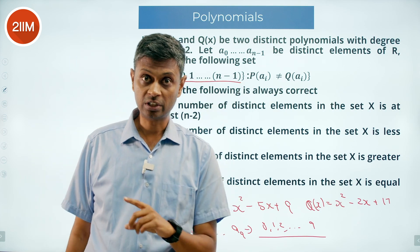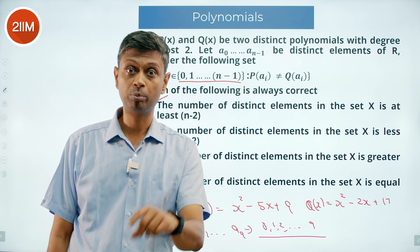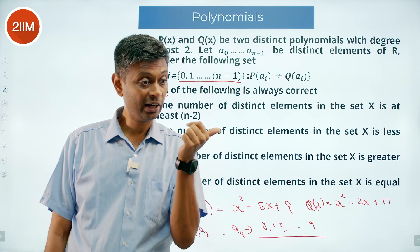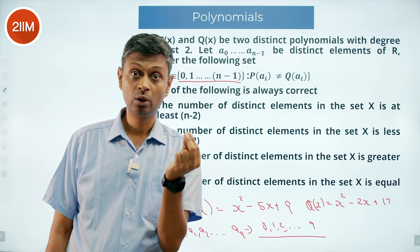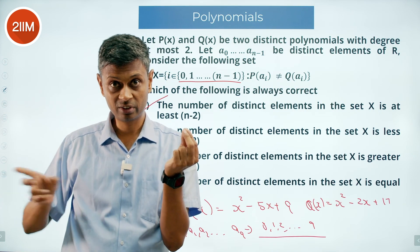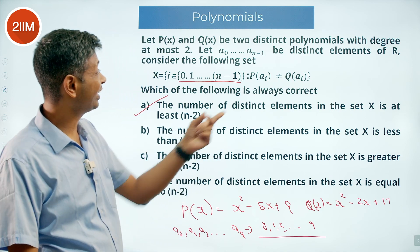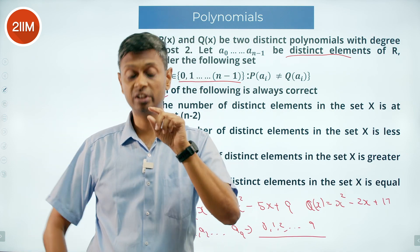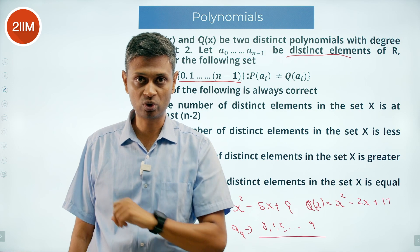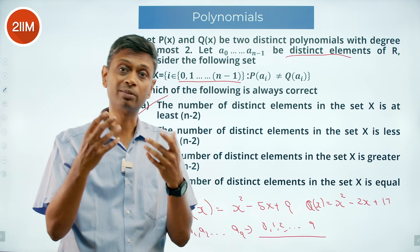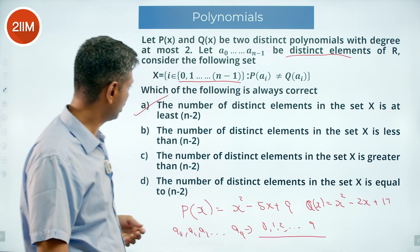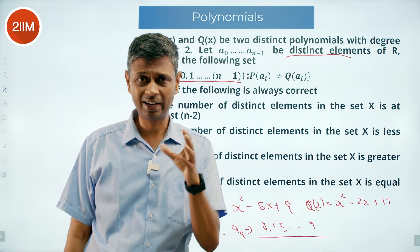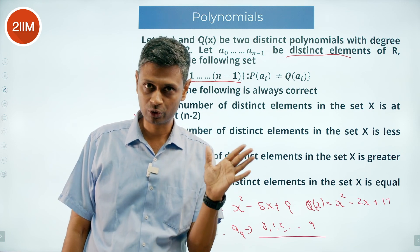The count can never be n-3 or fewer, because that would require three or more values among the aᵢ's where P(aᵢ) = Q(aᵢ) — meaning R(x) has three distinct real roots. But R(x) is at most quadratic and cannot have three distinct roots. Therefore the number of distinct elements in X is always at least n-2. What a delightful question!